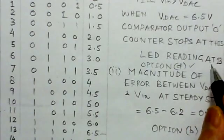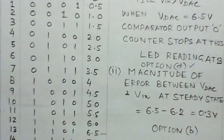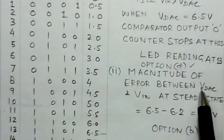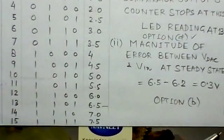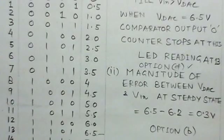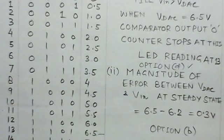You can find out, and now we can find the second part is magnitude of the error between VDAC and VIN at steady state. It is 6.5 volts and 6.2 is the VIN voltage, so the error is 0.3 volts between the two. So option B is the right choice here.